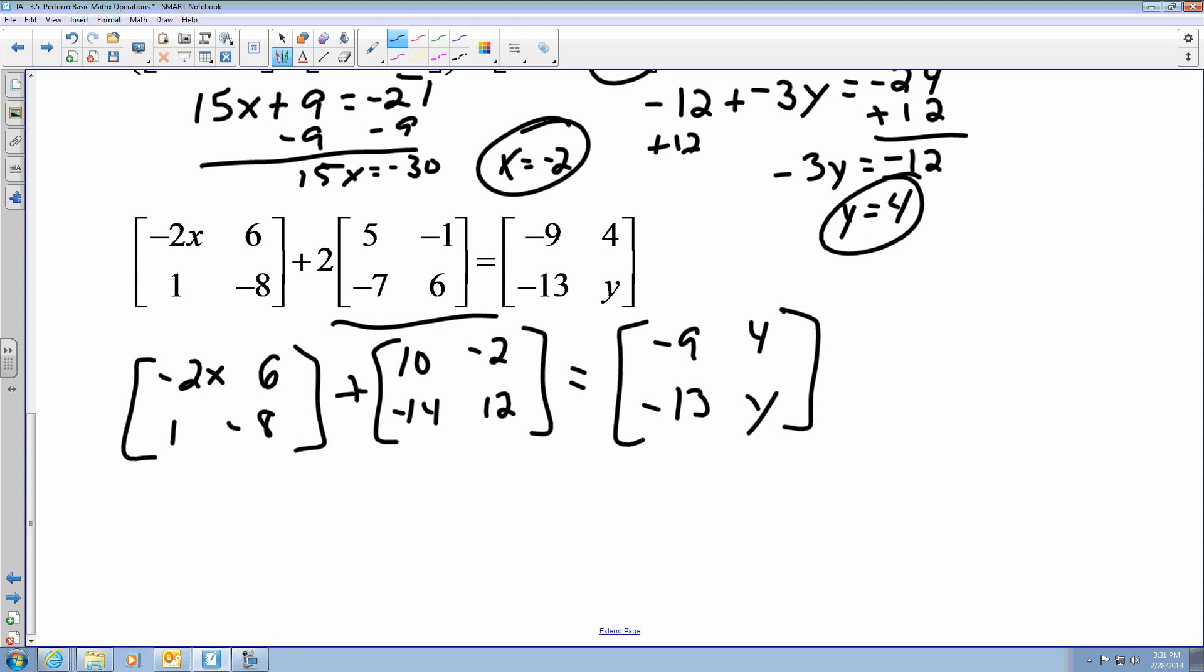So probably the easiest one is to find y. So I'm going to say negative 8 plus 12 equals y. And negative 8 plus 12 gives me a positive 4.